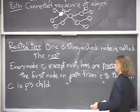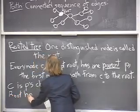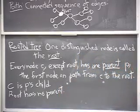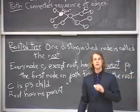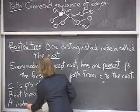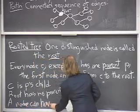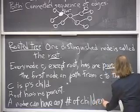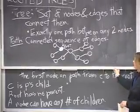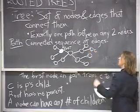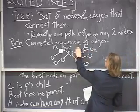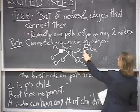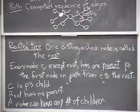The root is special — it's the one node in the tree that has no parent. In these general kinds of trees, one node is allowed to have any number of children. For example, in this tree, if I pick out node c, then the parent of c is p, because that's the first node on the path to the root. C is a child of p, and p also has another child d. P could have any number of children — there's no limit.